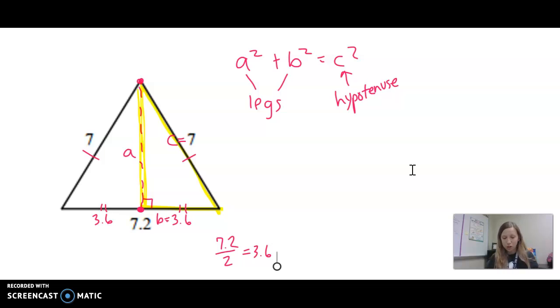So A we don't know, that's the altitude. B we know is 3.6, and C is 7. That's the longest side, otherwise known as the hypotenuse. Now we square them. Squared, remember, means multiplying it times itself. So 3.6 squared means 3.6 times 3.6.